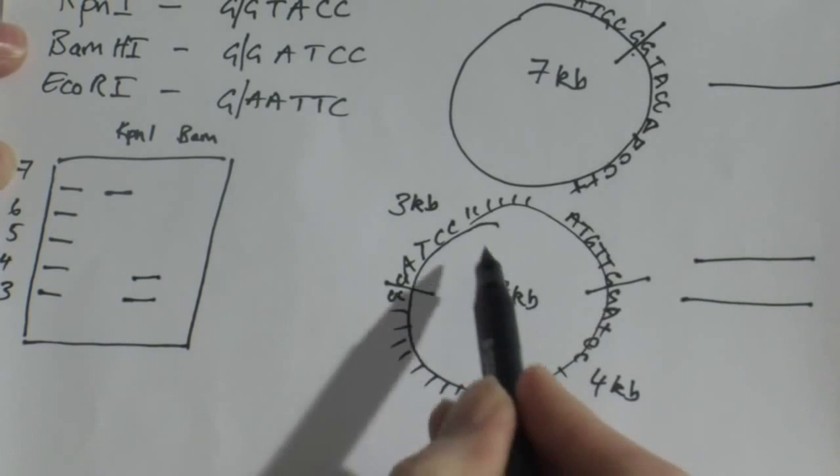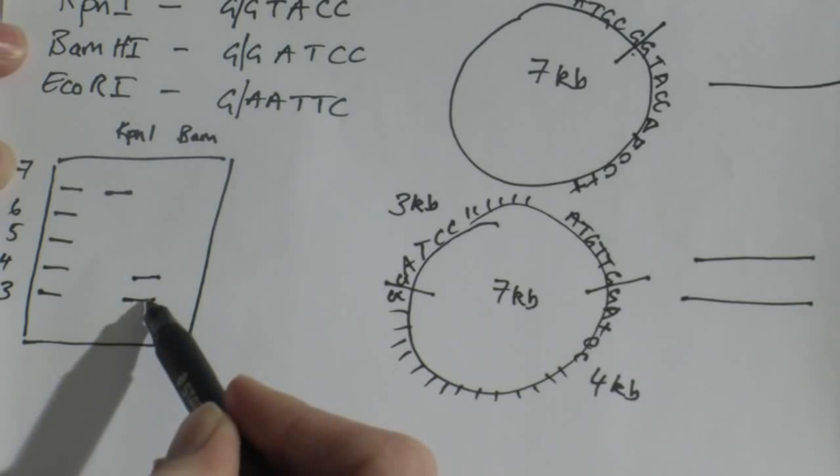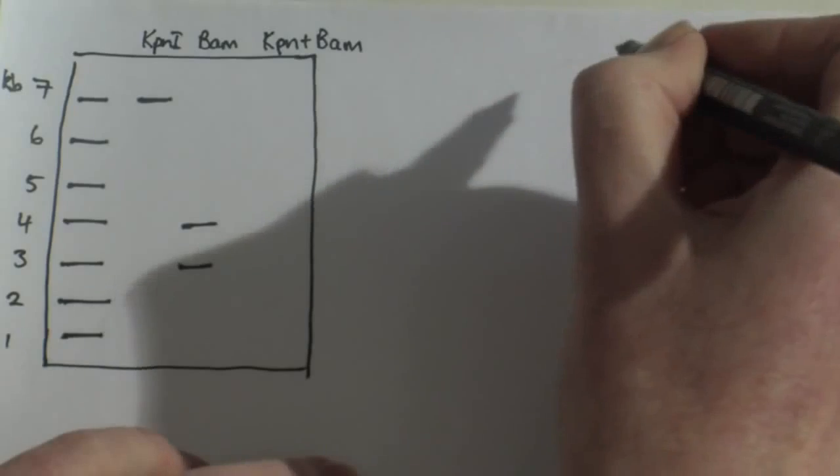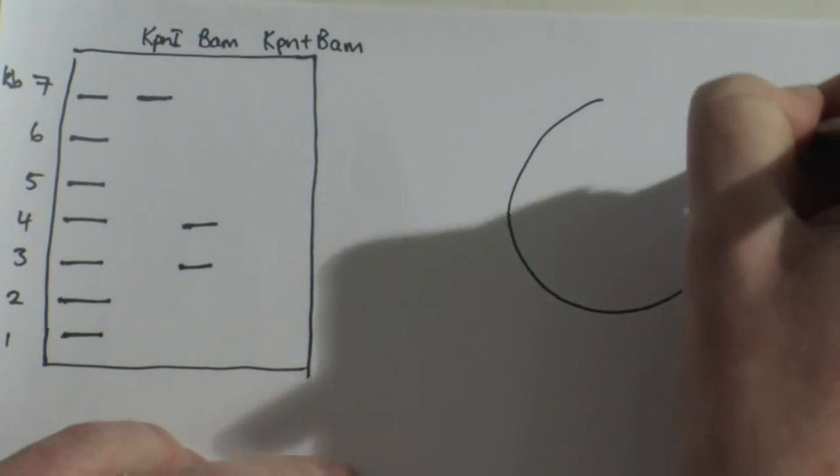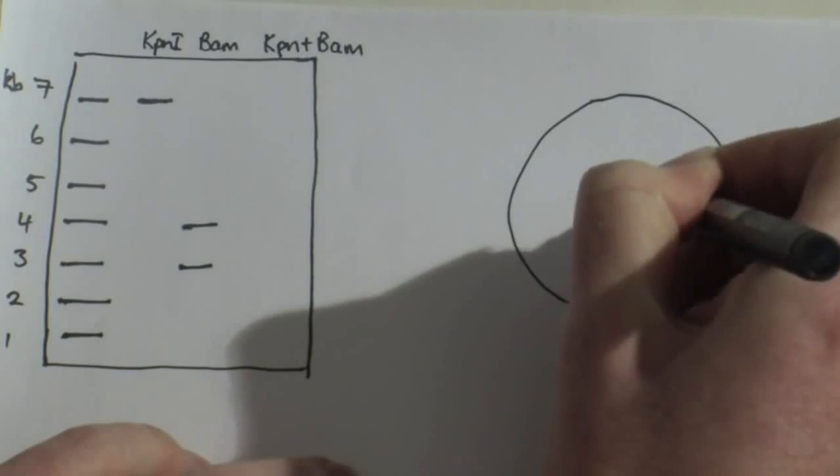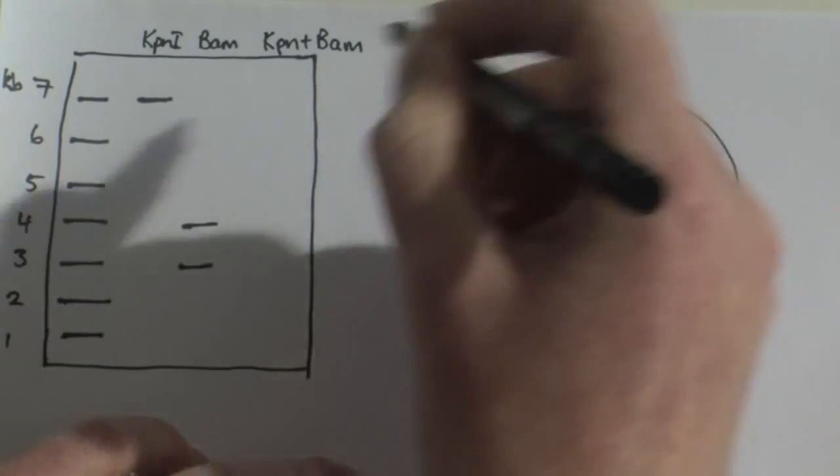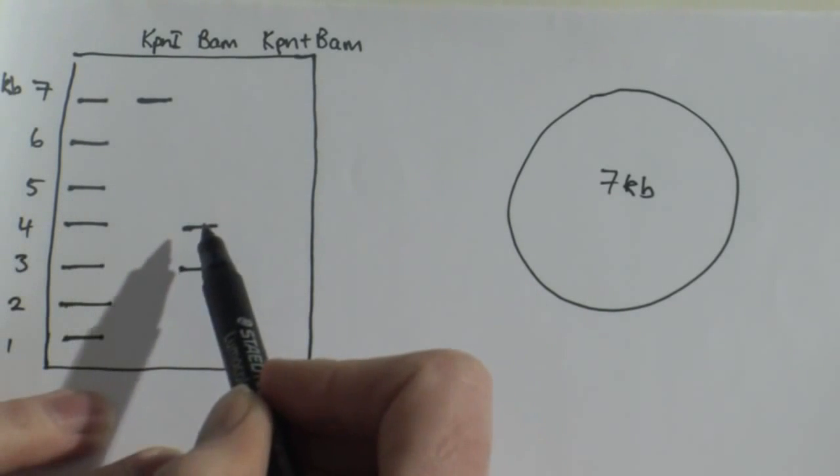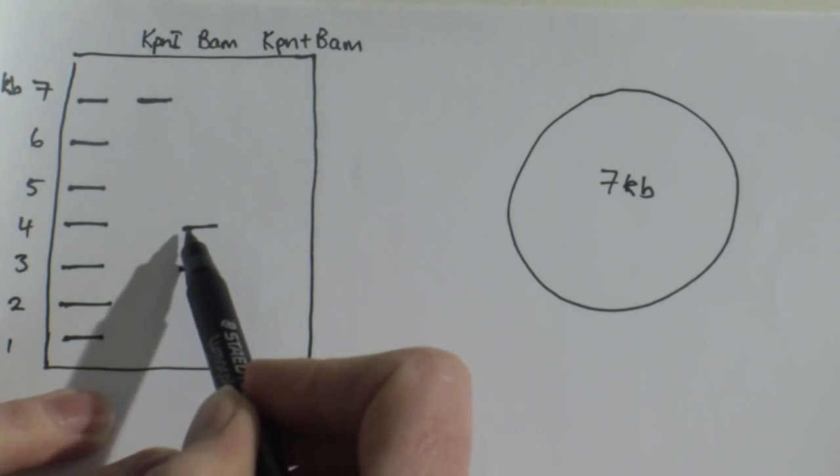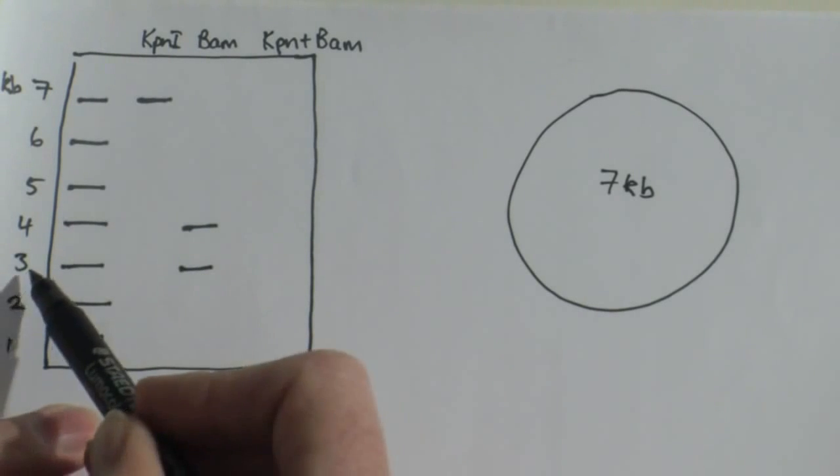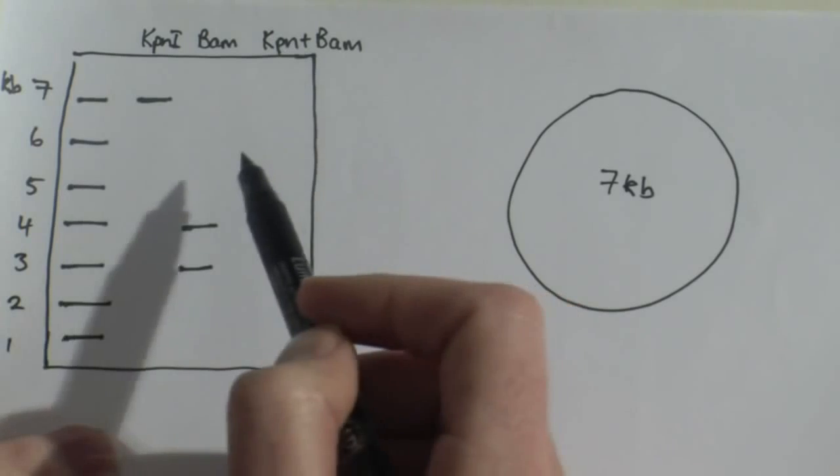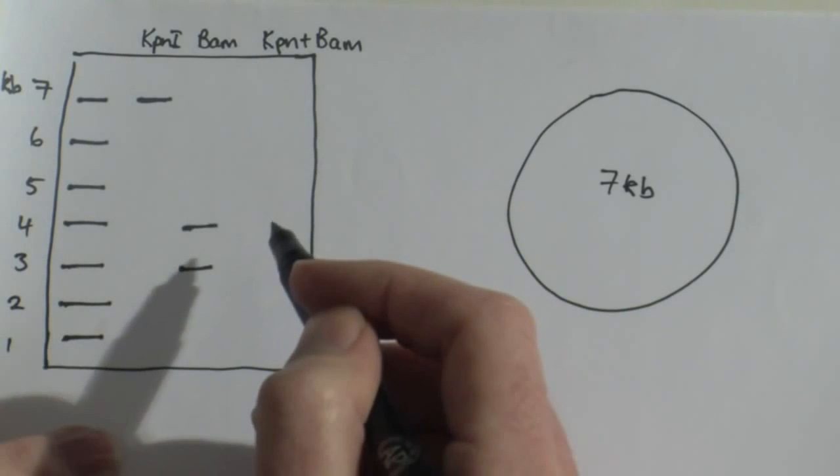We can see that the two fragments here that were cut with BAMH1 add up to give me the seven kilobase that is the total sum of the plasmid. The complication arises when I do a double digest of that circular plasmid. So we're looking at the same plasmid that we were looking at earlier. It's seven KB in size. I know that my KPN1 cut in one position and gave me a seven kilobase fragment. And I know that my BAMH1 cut in two positions and gave me two bands, one of them four kilobases and one of them three kilobases. Now if I do a double digest, in this example I use the KPN1 and BAMH1, a double digest of the plasmid gave me a different pattern of bands.